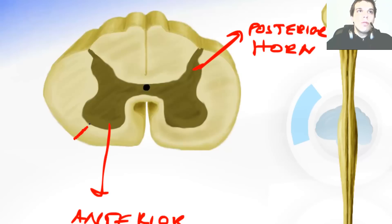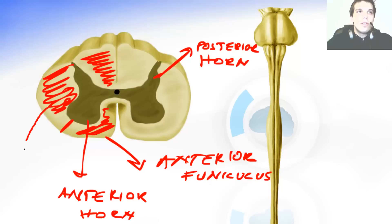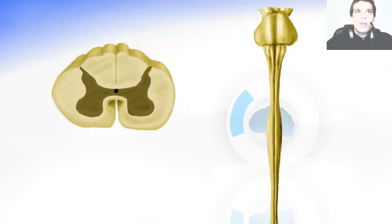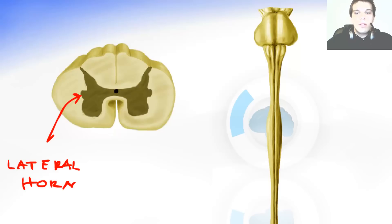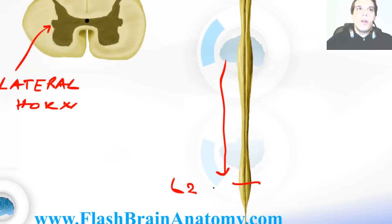In the white matter we can distinguish the anterior funiculus, the lateral funiculus, and the posterior funiculus. The thoracic segments are smaller, and the gray matter also has one more horn — the lateral horn. This lateral horn can be found in all segments down to the first two lumbar segments, L1 and L2, after which it can no longer be found.